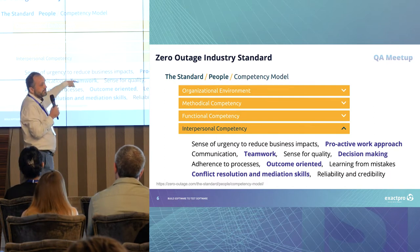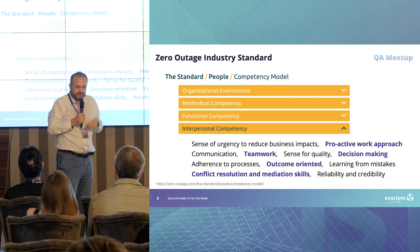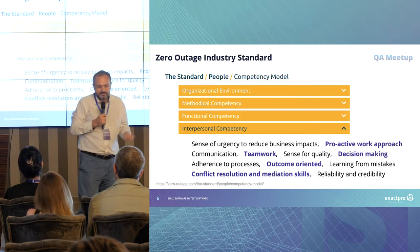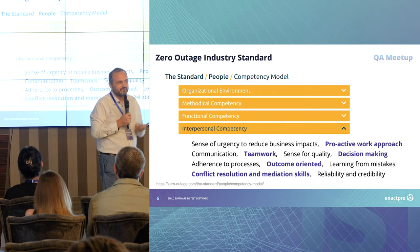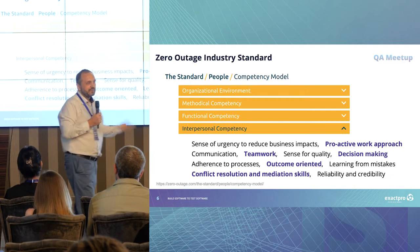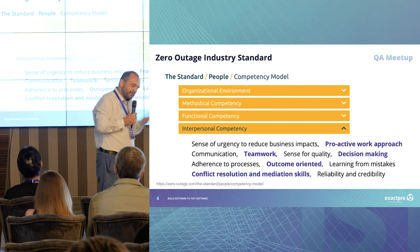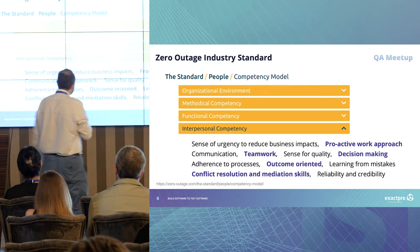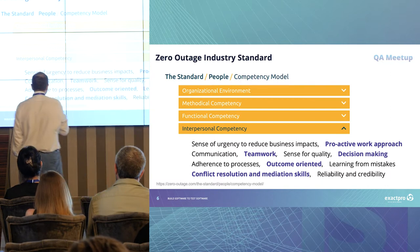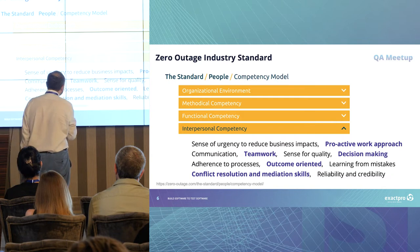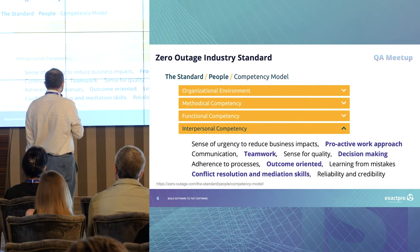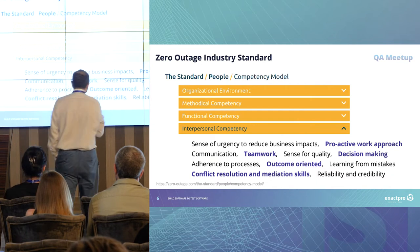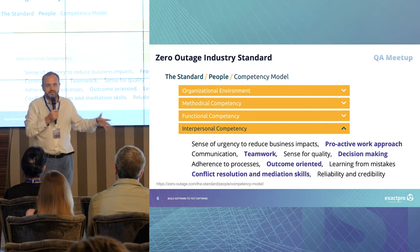Decision making is very much related to the previous point. If you trigger an event every minute, it's too noisy; if you don't trigger at all, it's not good. So you have to make that decision — decision making is an important skill. Also: adherence to process, outcome-oriented, learning from mistakes, conflict resolution, mediation, reliability, and creativity.